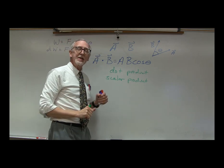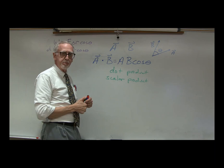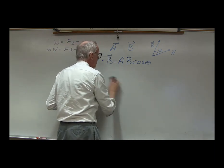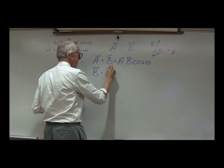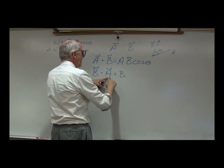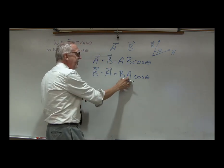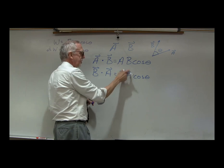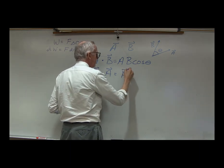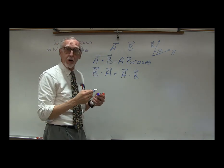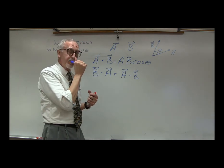I'd like to spend a few minutes looking at some of the properties of this way of multiplying vectors, A·B. First of all, what is B·A? That would be magnitude B times magnitude A times cosθ, which is the same as A·B. So B·A equals A·B — that is the commutative property of the dot product.